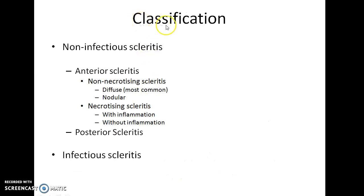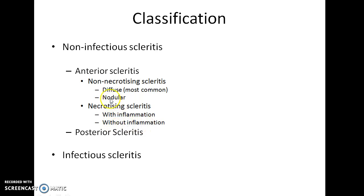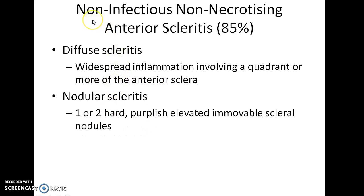Coming to the classification of scleritis. Scleritis can be classified into non-infectious scleritis and infectious scleritis. Non-infectious scleritis can be classified into anterior scleritis and posterior scleritis. Anterior scleritis can be further classified into non-necrotizing and necrotizing scleritis. Non-necrotizing anterior scleritis can be further classified into diffuse type and nodular type. Necrotizing anterior scleritis can be further classified into necrotizing scleritis with inflammation and necrotizing scleritis without inflammation.